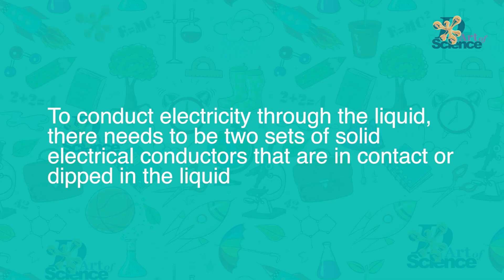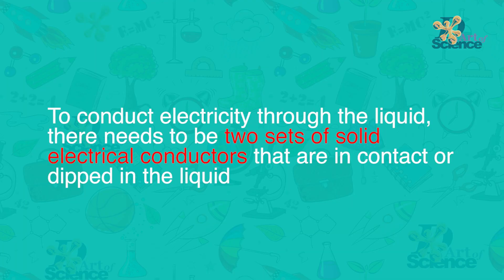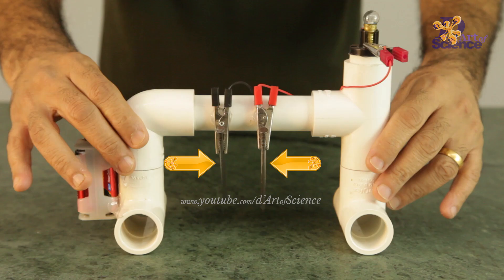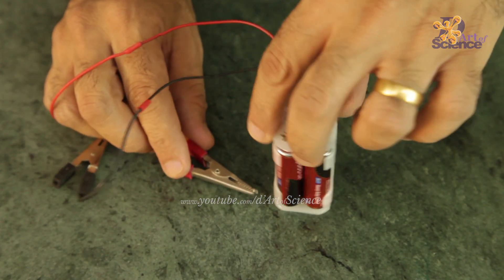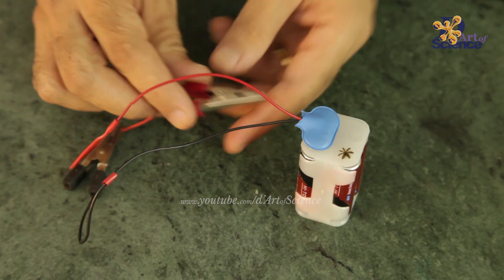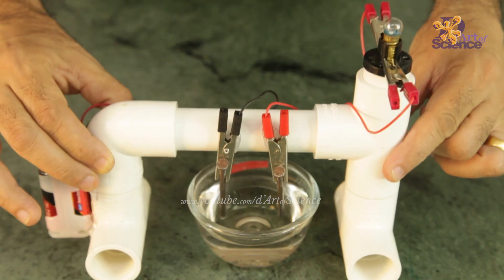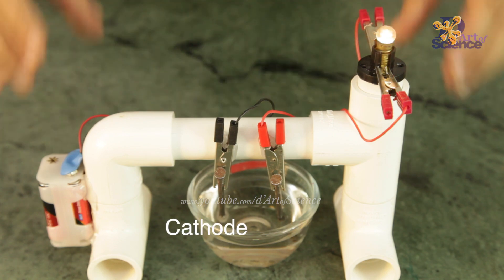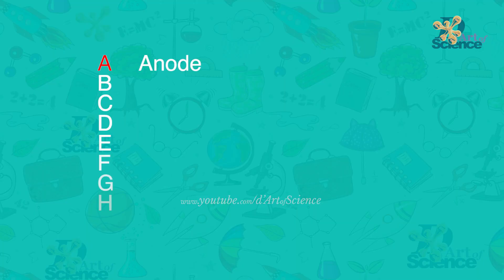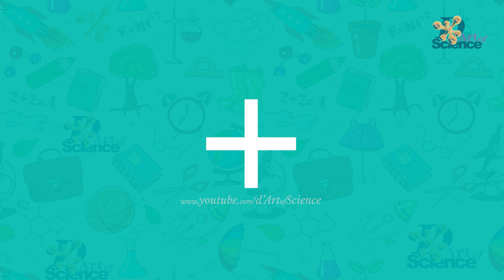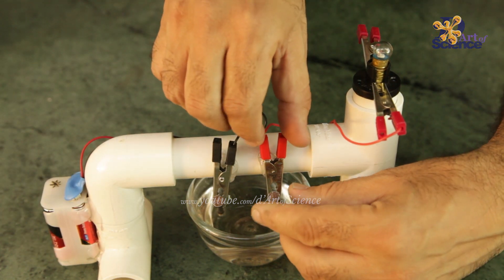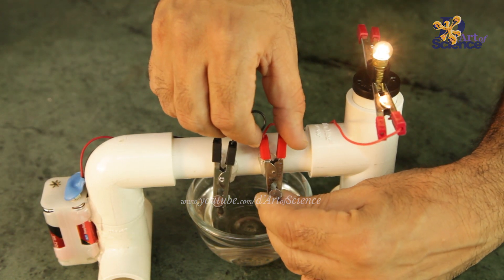To conduct electricity through the liquid, there needs to be two sets of solid electrical conductors that are in contact with or dipped in the liquid. These are called electrodes. Since any DC current has a positive and a negative terminal, like all batteries have, the electrode connected to the positive side is called the anode, and the electrode connected to the negative side is called the cathode. The A of anode comes before the C of cathode, and plus comes before minus — that's how I used to remember it.